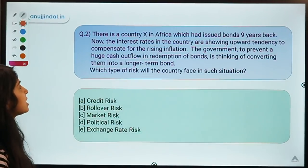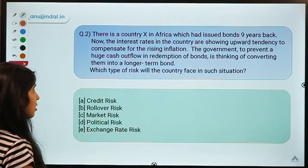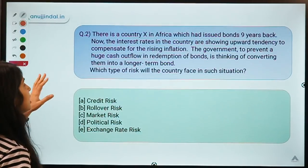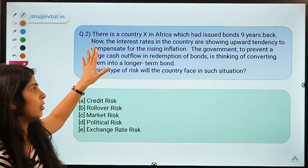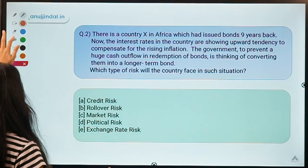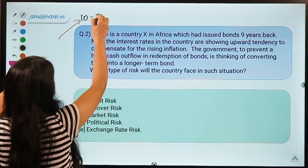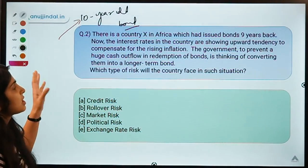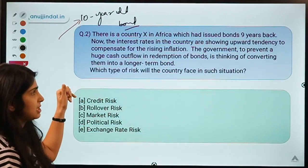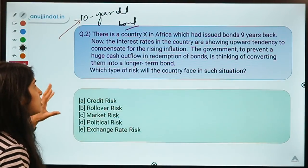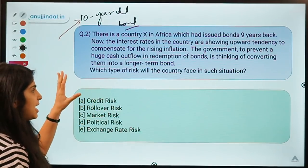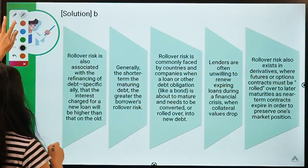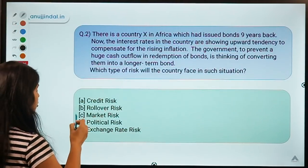Question number two: Country X in Africa issued bonds nine years back — it's a ten-year bond approaching maturity. Interest rates are showing an upward tendency to compensate for rising inflation. The government wants to prevent a huge outflow on redemption and is thinking of converting them into longer-term bonds. Which type of risk will the country face in such a situation? The solution is option B — rollover risk.